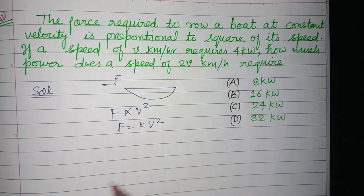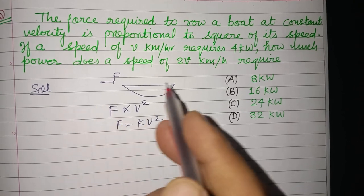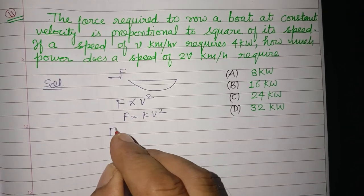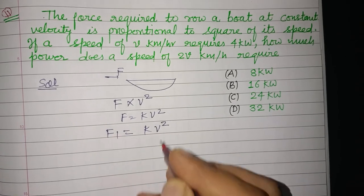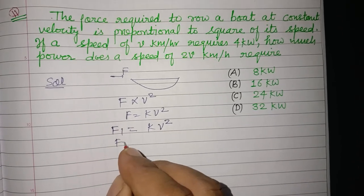So F1 is when speed is V kilometers per hour, and F2 is when speed is 2V kilometers per hour.